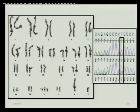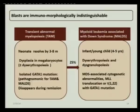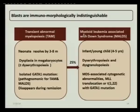Is it transient abnormal myelopoiesis (TAM) or real myeloid leukemia associated with Down syndrome? By morphology and immunophenotype the blasts are indistinguishable. Sometimes even by clinical situation, TAM may present with life-threatening conditions like myocardial fibrosis. The key differentiating points between TAM and real leukemia are important because management differs significantly — whether to watch and closely follow up or start chemotherapy immediately.